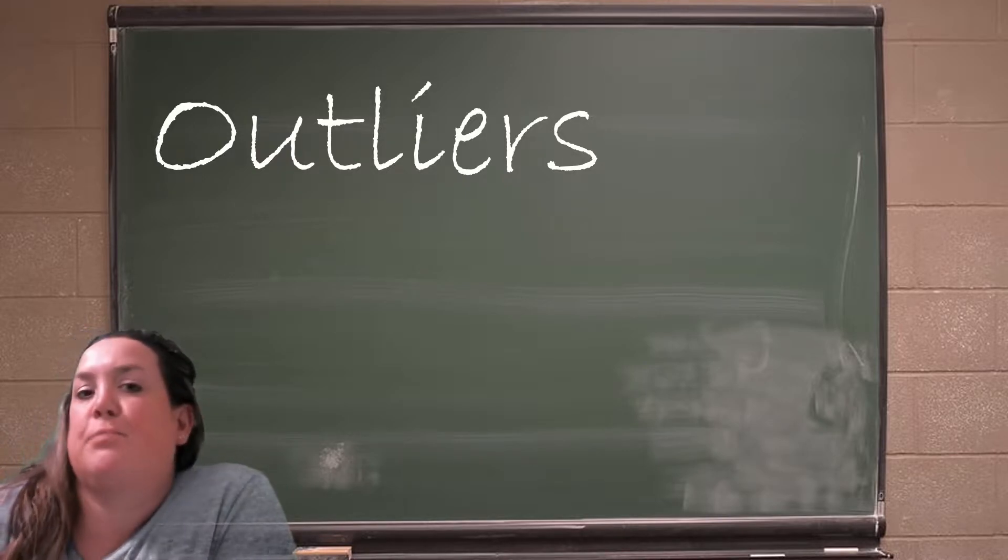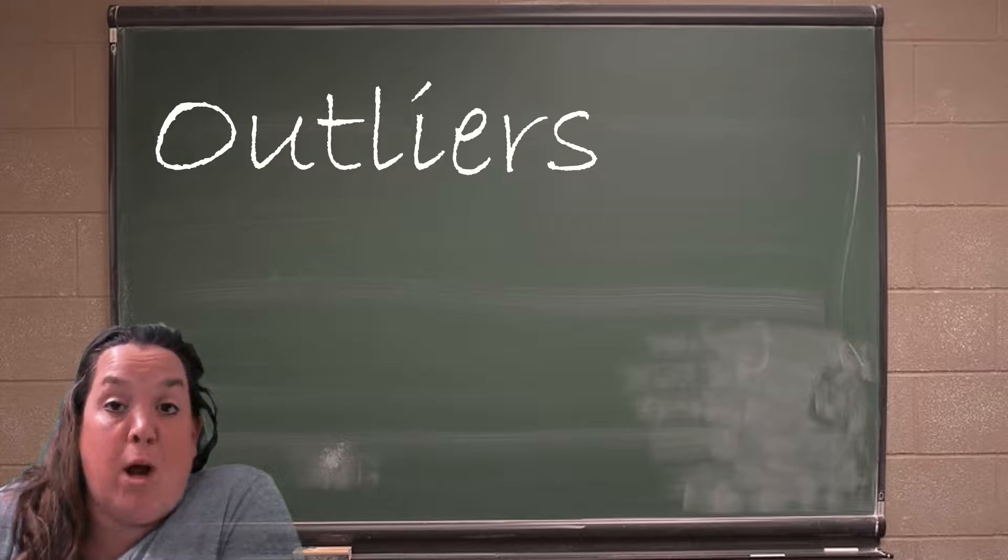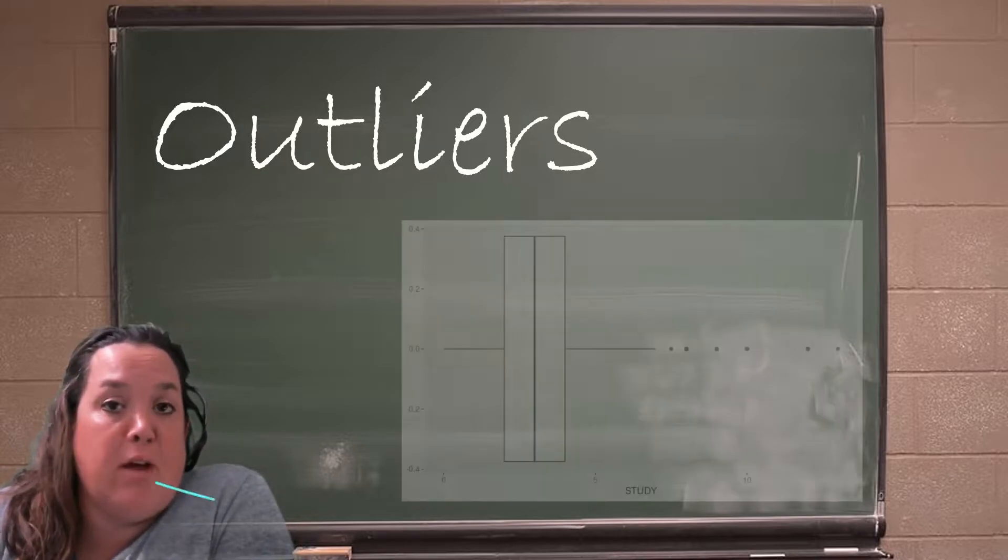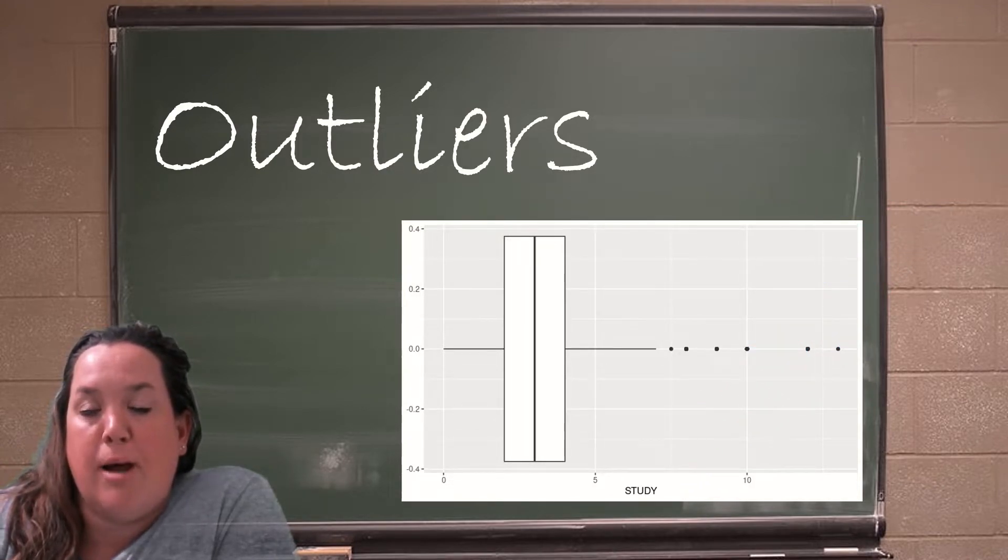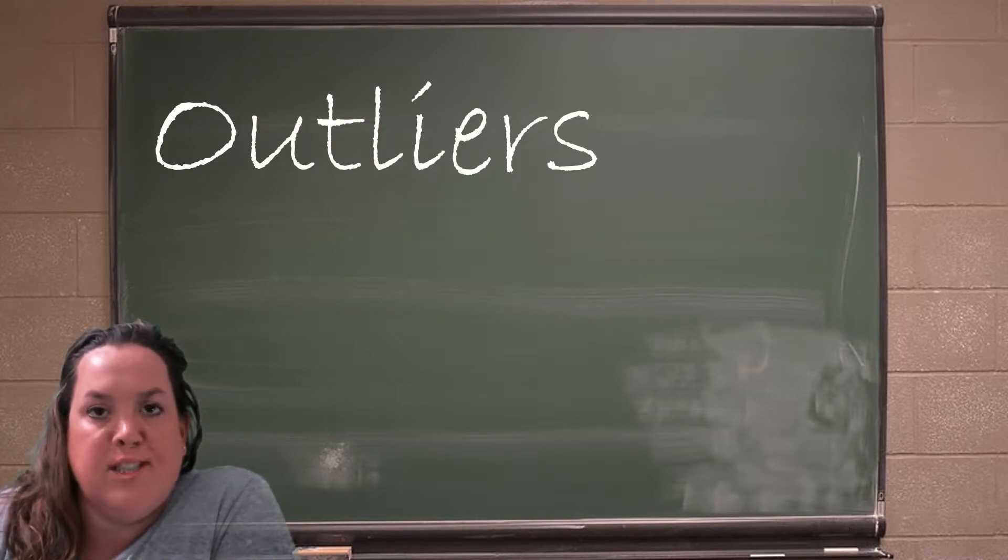So in a box plot, you can see them readily. They show up as either circles or asterisks. Sometimes they will be described as being either minor or major, which is why sometimes there's a difference in the shape.